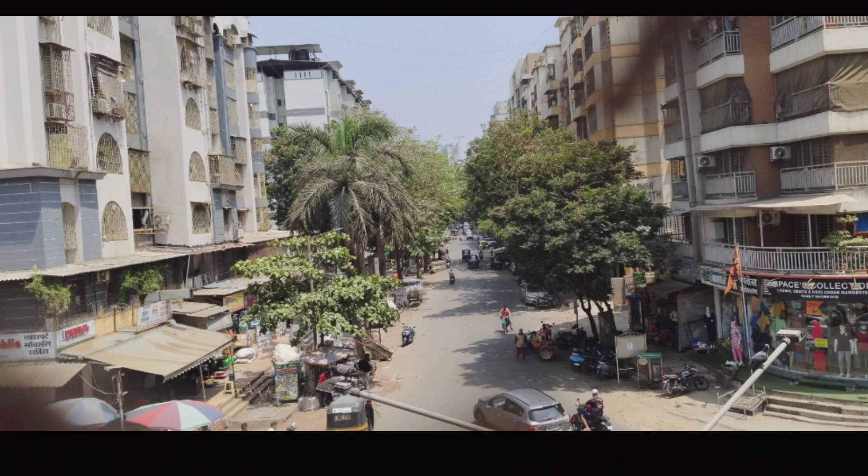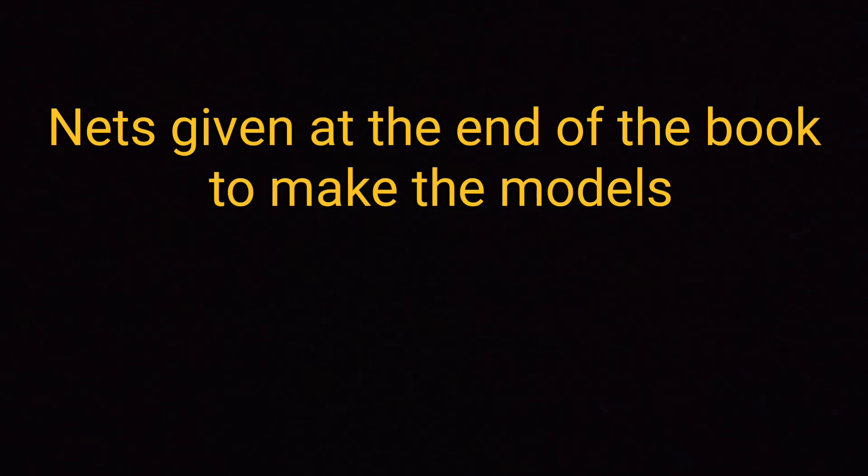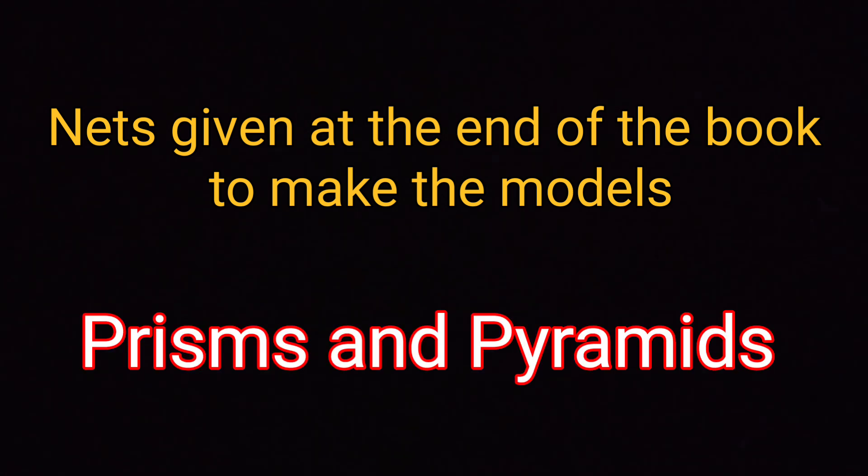Page number 3, you have craft activities. You have to make a sphere-like shape with paper strips. Also, there are nets given at the end of the book to make the models of prisms and pyramids.